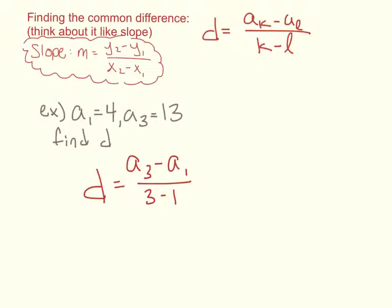Well, what's a₃ equal? 13. 13. And a₁? 4. Over 3 minus 1? 13 minus 4? 9. 9. Over? 2. Okay, good.